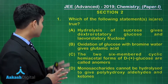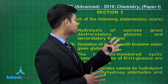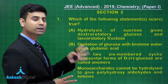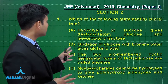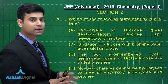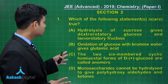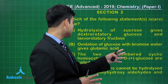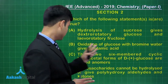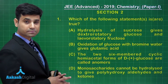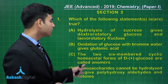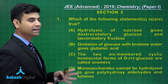Option A: hydrolysis of sucrose gives dextrorotatory glucose and levorotatory fructose. Option B: oxidation of glucose with bromine water gives glutamic acid. Option C: the two six-membered cyclic hemiacetal forms of D-plus glucose are called anomalous. Option D: monosaccharides cannot be hydrolyzed to give polyhydroxy aldehydes and ketones.